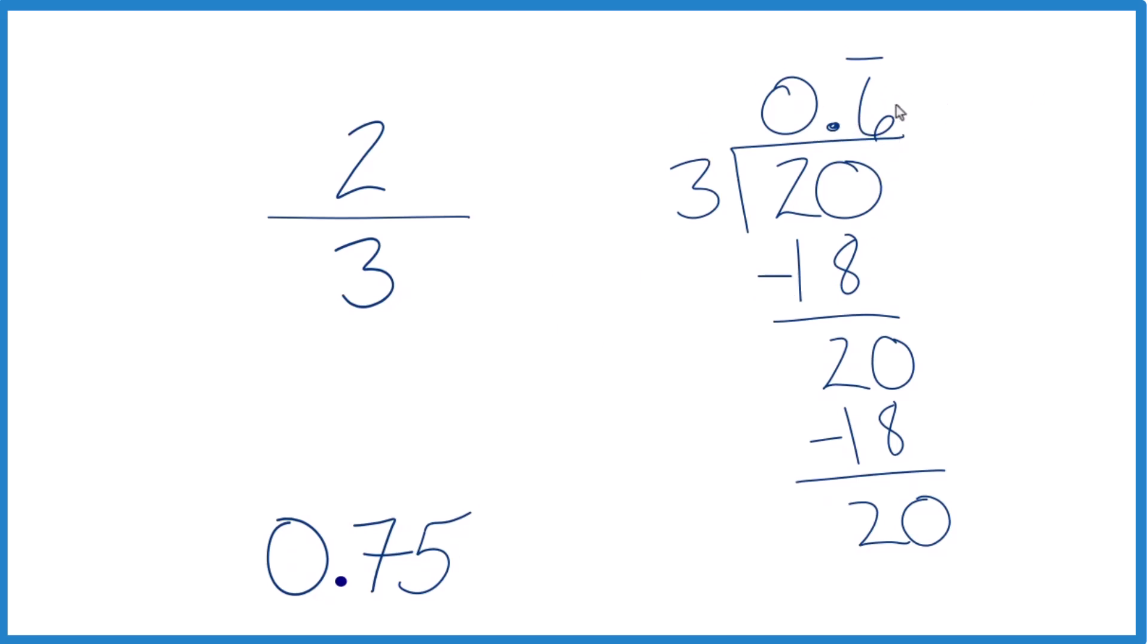But either way, 0.6, 0.67, that is less than 0.75. So we can say that 0.75 is greater than the fraction two-thirds.